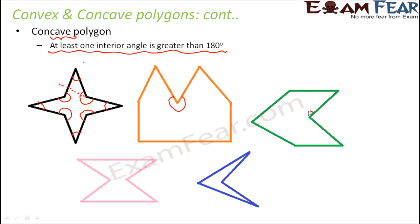Here you have this angle greater than 180, and wherever you have that, you see the cave-like indentation. So here you have just one cave, here you have one cave, and here you have four caves — because there are four angles greater than 180 degrees. Similarly, in these other diagrams, you have angles greater than 180 degrees, and that is why these are concave polygons. So these are the two types of polygons: convex and concave.